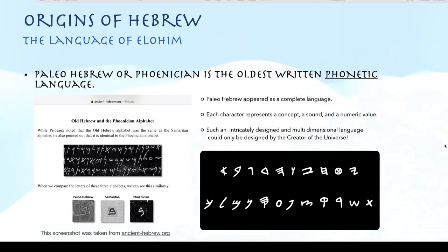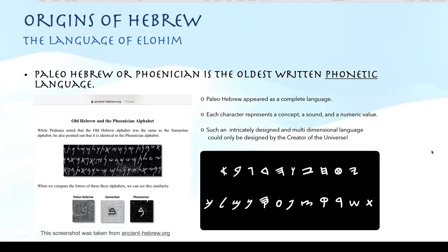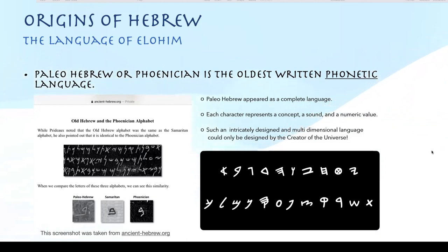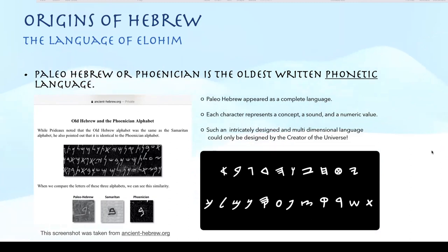Jeff Benner — great resource. I love this comparison he shows between the Phoenician, the Samaritan, and the Paleo Hebrew. You can see how there was this progression, not unlike our letter B, especially when you look at that Samaritan script. There was this progression, and of course it progressed to what we now have in the Tanakh, which is the Aramaic square script. That's what we're going to primarily focus on learning, but as we learn that, I'm also going to be teaching the Paleo Hebrew characters alongside it.